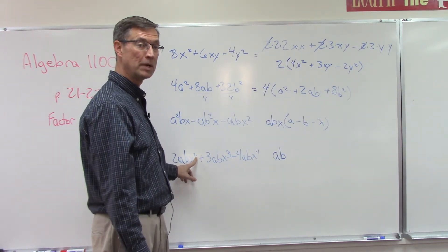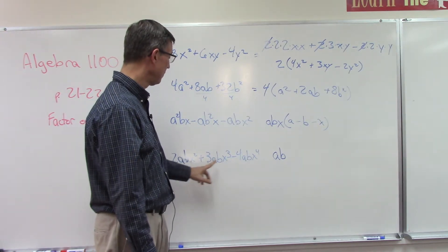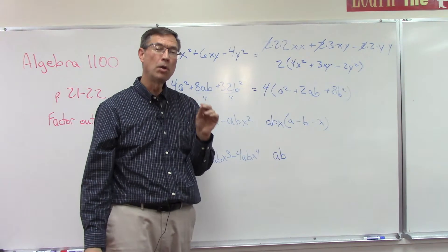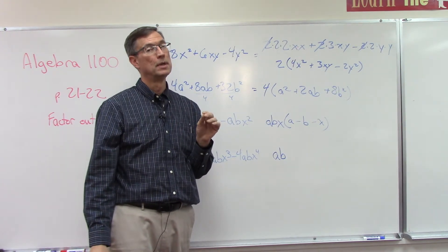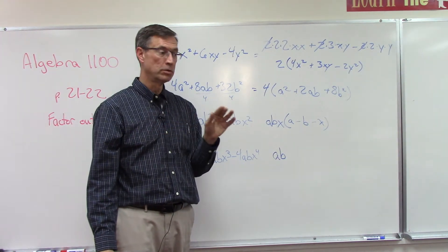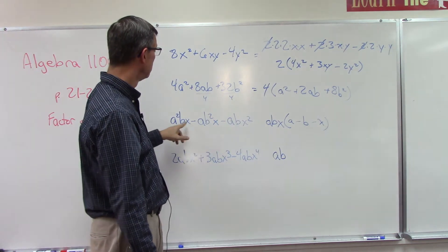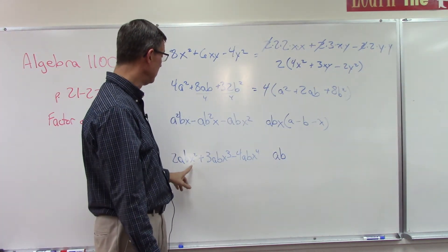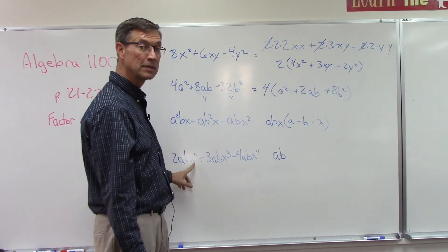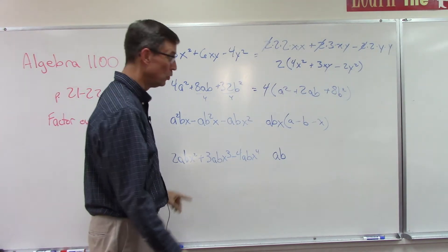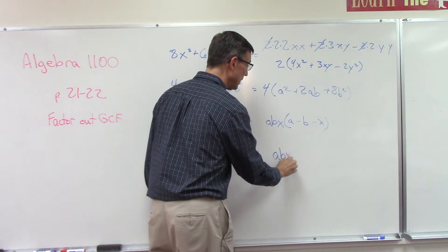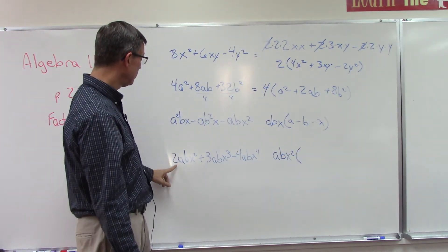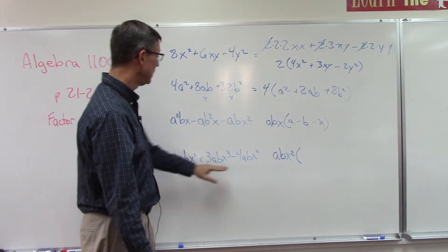Here's the rule: when you look at the variable x, take the smallest exponent that appears in any of those terms. Up in the previous example the smallest exponent was 1. But here the smallest exponent on x is 2, so I can actually take out x squared.